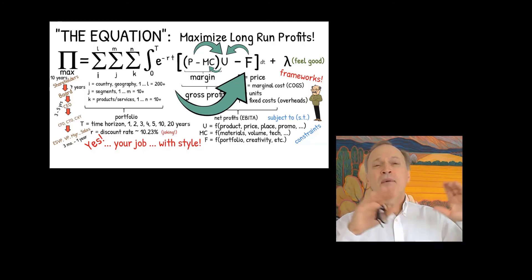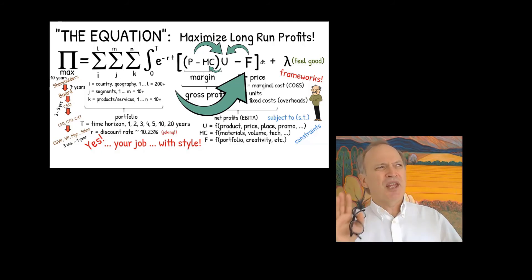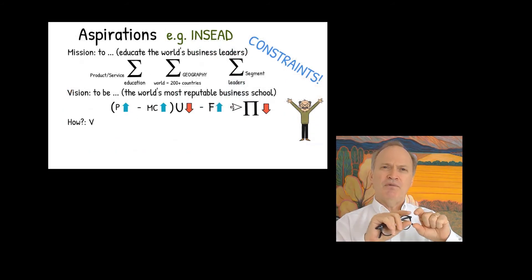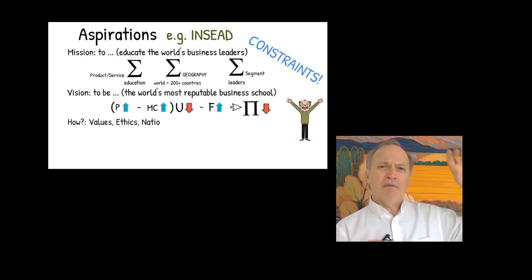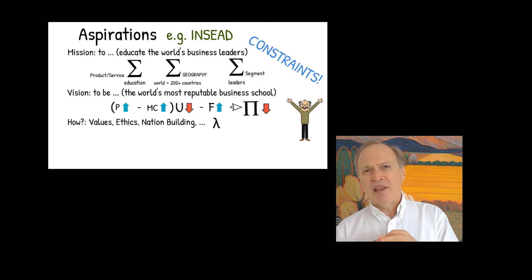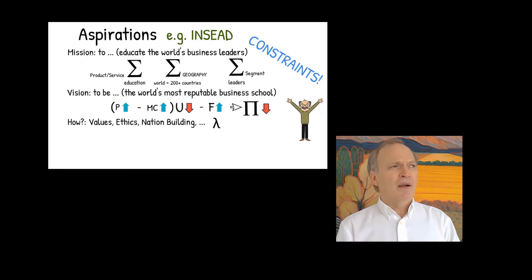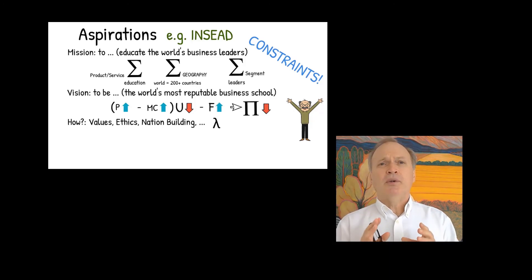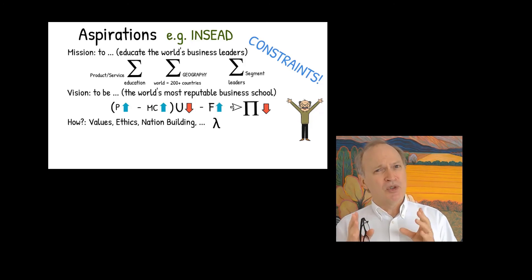The sum of these other objectives is often called the values statement. So you have mission, vision, and values. What's in the values? The values are your ethics, whether or not you're going to abide by the law, legal considerations, and other forms of purpose. This is the way most people talk.